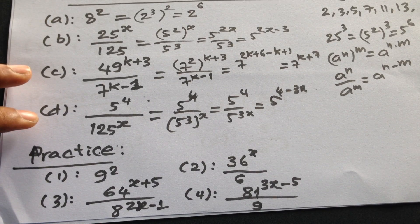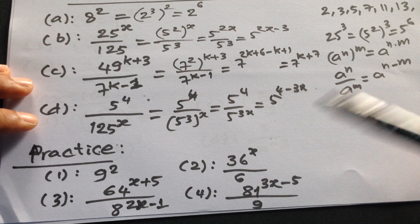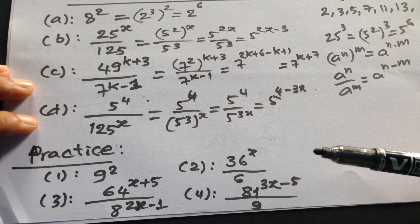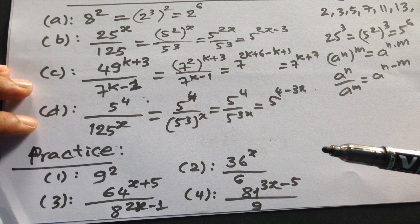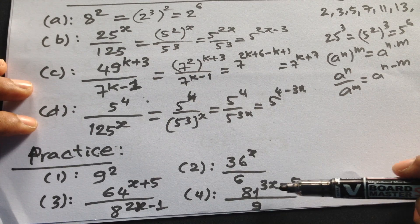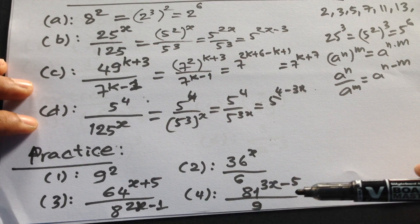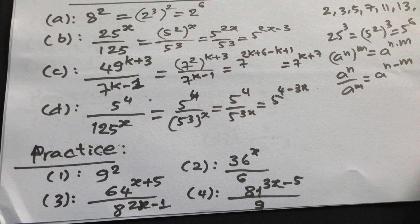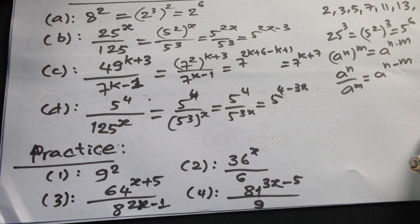Problem 1: 9 to the power 2. Problem 2: 36 to the power x divided by 6. Problem 3: 64 to the power x+5 divided by 8 to the power 2x-1. Problem 4: 81 to the power 3x-5 divided by 9. Express these expressions in simplest form with a prime number base.